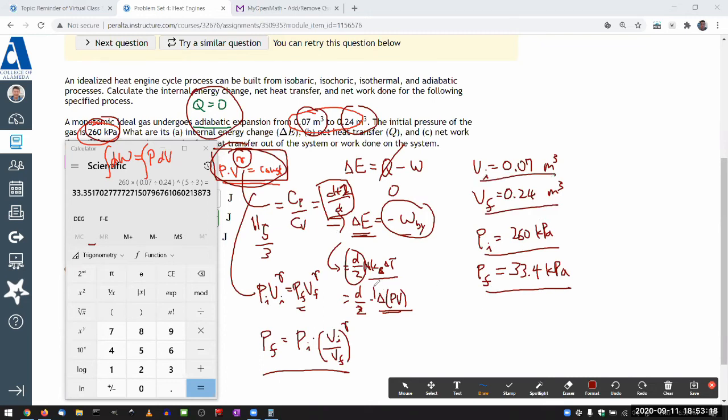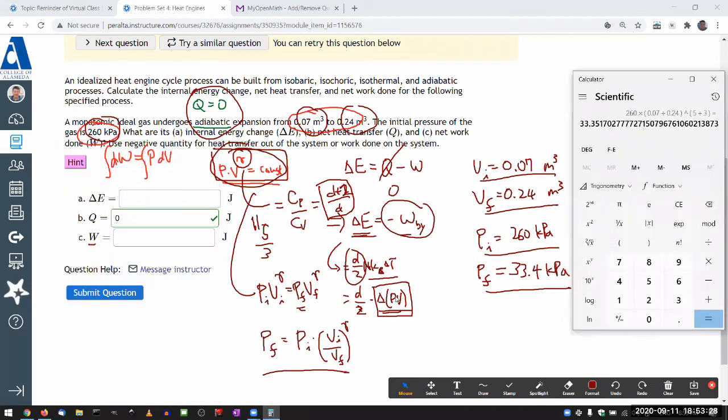Now finally we do this. There's a change in temperature. So I think the easiest, quickest way to do this is to do pressure times volume at the final and then do minus pressure times volume at the initial. So I already have final volume, 0.24.